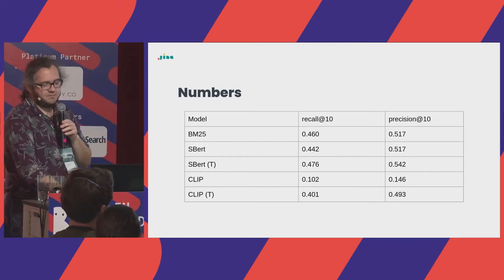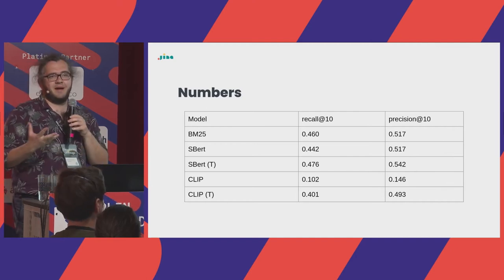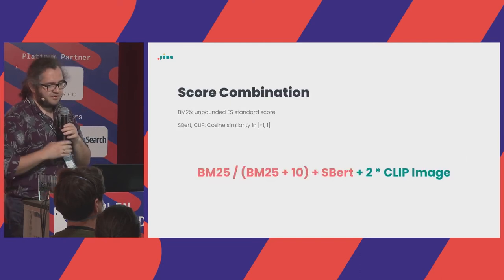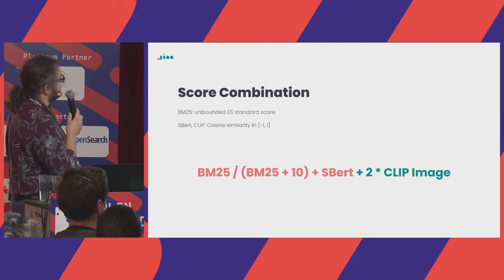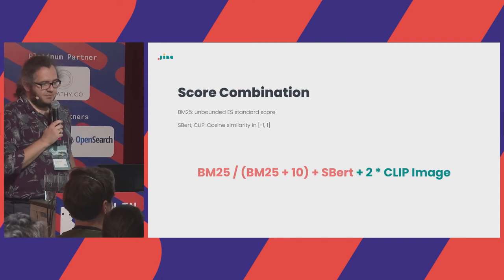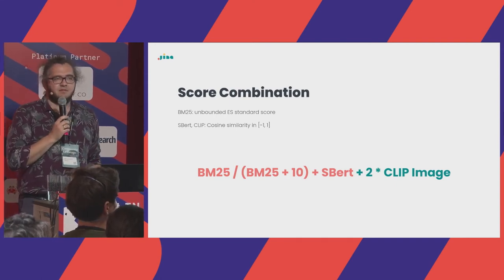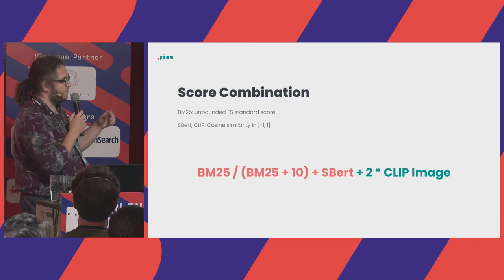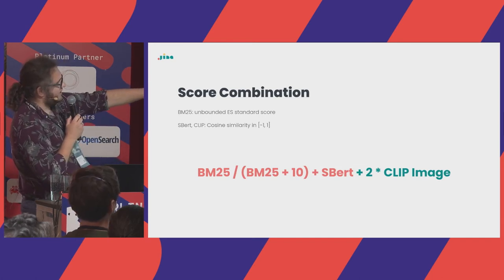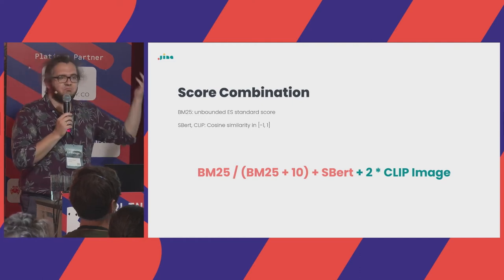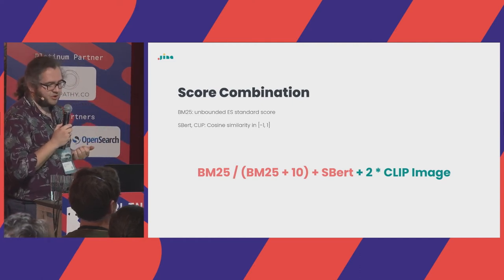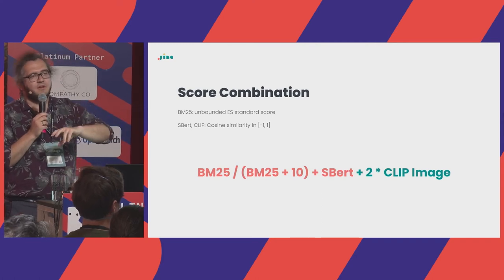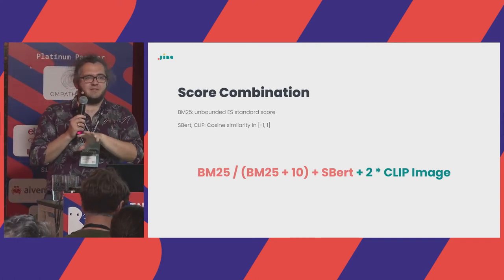We then wanted to combine the models. Elasticsearch's standard score is unbounded so we needed normalization; SBERT and CLIP give cosine similarities between -1 and 1. After trying many combinations, what worked best was: BM25 divided by (BM25 + 10) as score normalization, plus the SBERT score as the text component, and then two times the CLIP score — so the text and image signals have roughly equal weight in the final combined score.